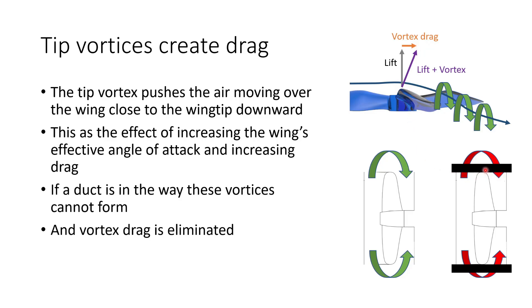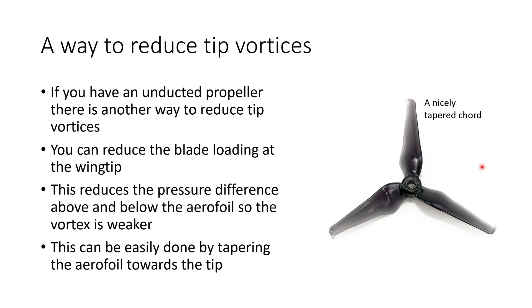If we put a duct very close to the tip of the propeller, the wingtip vortex can't form because air can no longer easily spill from the underside of the blade to the top since the duct is in the way. By this method we can actually eliminate the vortex drag. Even without a duct, there are ways to reduce tip vortices — for example, on an unducted prop you can reduce blade loading at the wingtip by tapering the chord, which reduces the pressure difference above and below the aerofoil close to the tip and makes the vortex weaker.